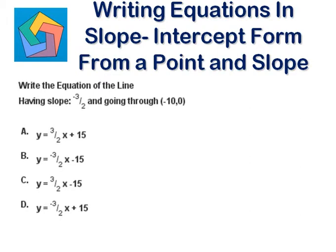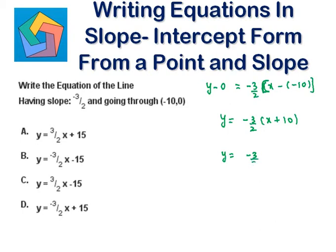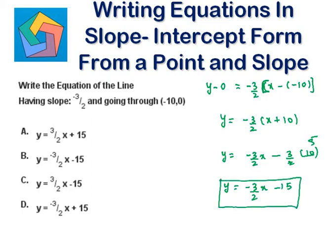Next problem: write the equation of the line having slope minus 3/2 and going through (-10, 0). So y minus 0 equals minus 3/2 times x minus minus 10, or y equals minus 3/2 times (x plus 10), which gives y equals minus 3/2x minus 15. This is the answer in part B — we can highlight that.